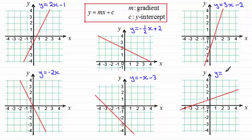The gradient is positive 1 third, so y equals a third x. And the y intercept is 1, so that's plus 1.